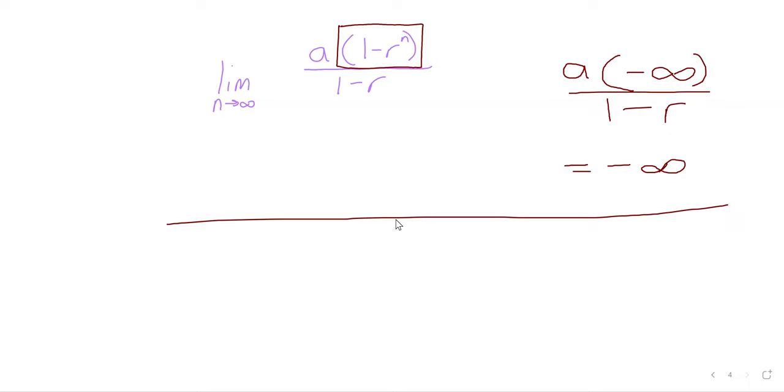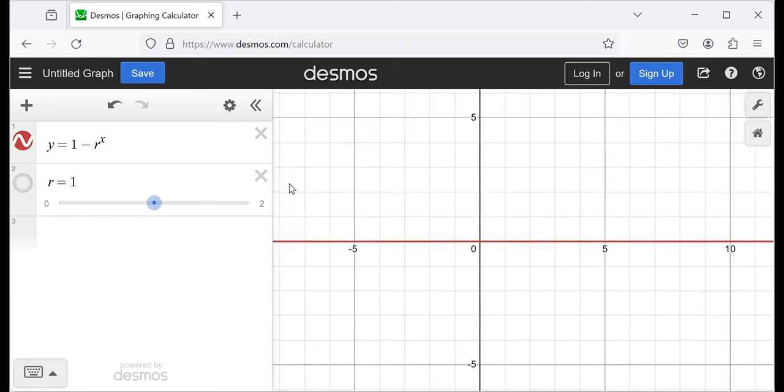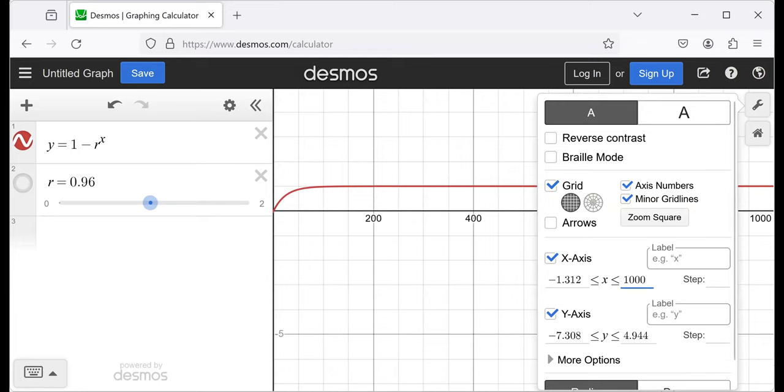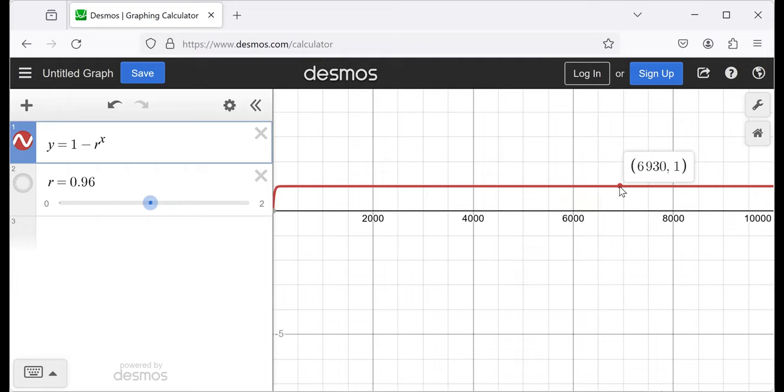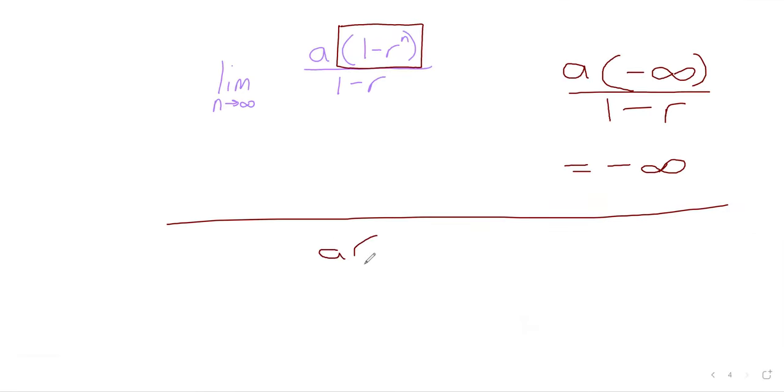If r is greater than 1, as n goes to infinity, one minus r to the n goes to negative infinity. And a number a times negative infinity divided by one minus a number r is infinity or negative infinity. So this whole fraction diverges. On the other hand, if r is less than 1, then what happens as we go to infinity is that we have a horizontal asymptote at 1. So if r is less than 1, then one minus r to the n converges to 1. And we wind up with a limit of a over one minus r, which is precisely what I said that the sum would be.